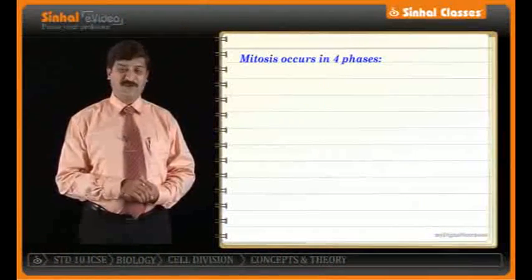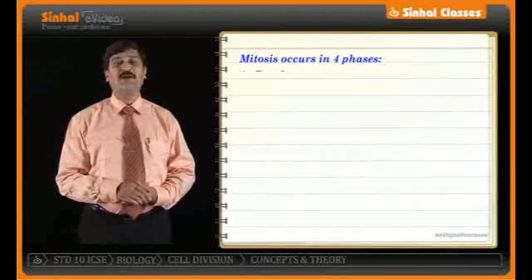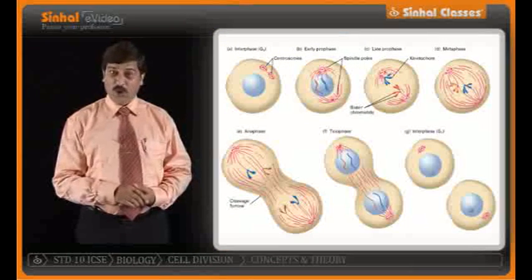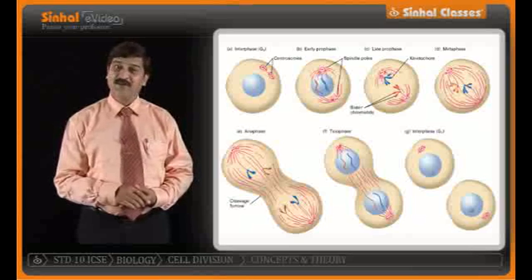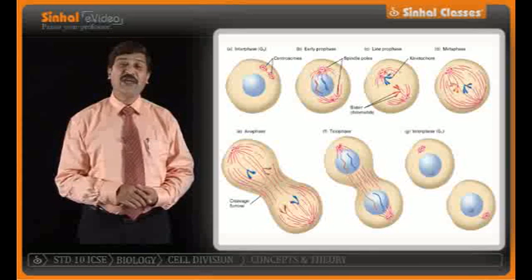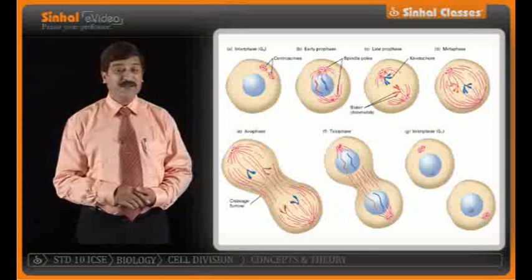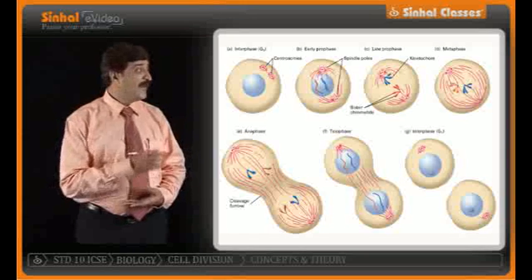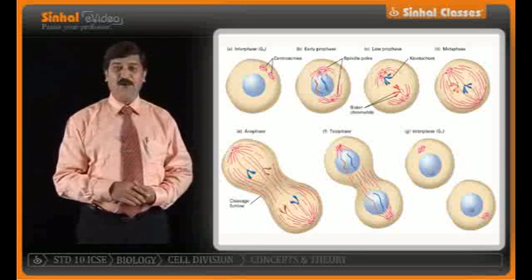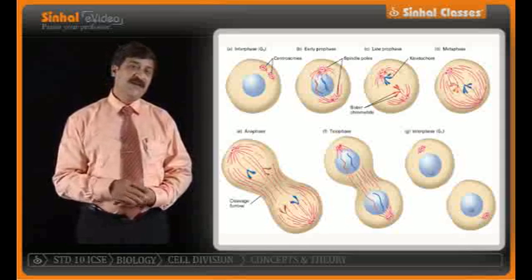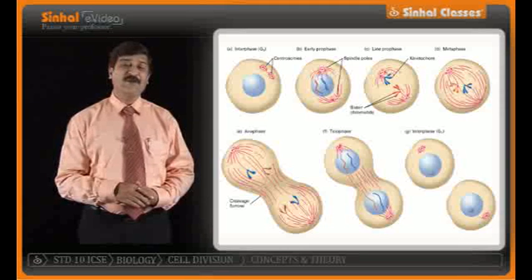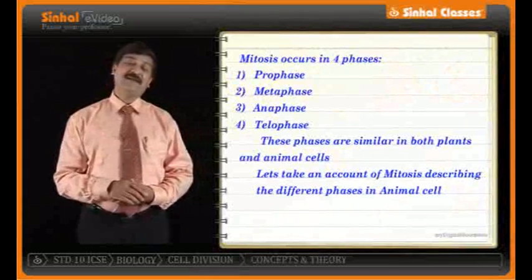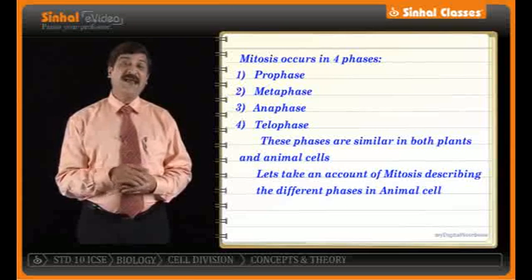Mitosis is a process which comprises four phases: first, prophase; second, metaphase; third, anaphase; and fourth, telophase. Please don't forget that before these four phases there is interphase. These four phases are similar in both plants and animals. We will now study mitosis in detail as it takes place in animal cells.